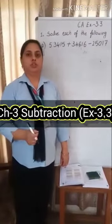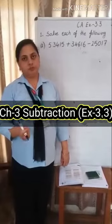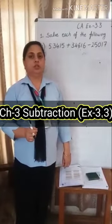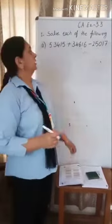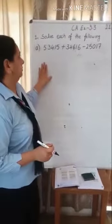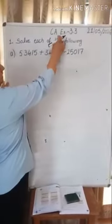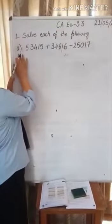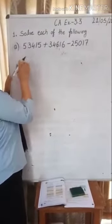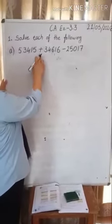In the last session we did rules of subtraction. Now in this session I will teach you sums based on addition and subtraction. Exercise 3.3, question number 1, part A. In this question plus sign is there and minus is also there.